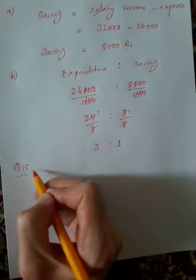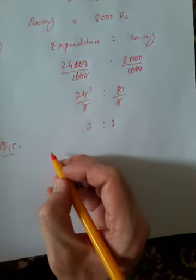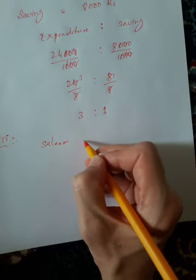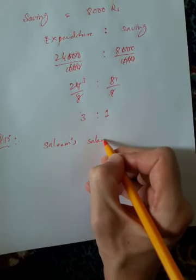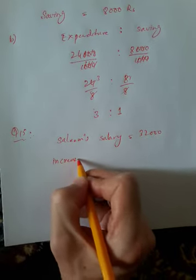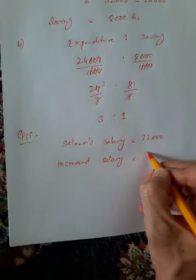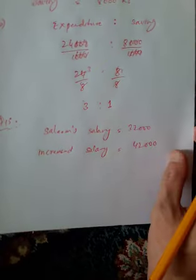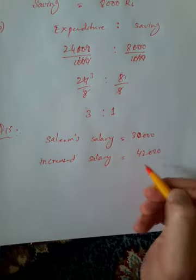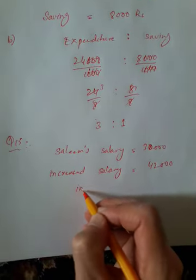Question 15: Salim's salary increased from 30,000 to 42,000. We need to find how much the increase was.